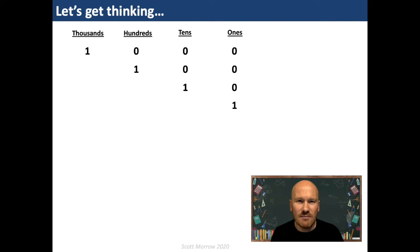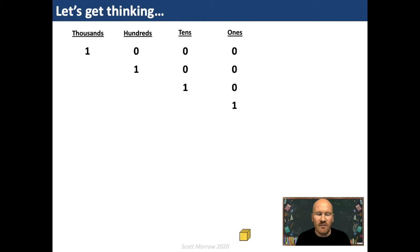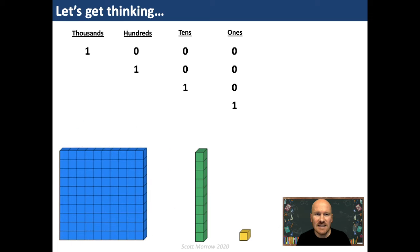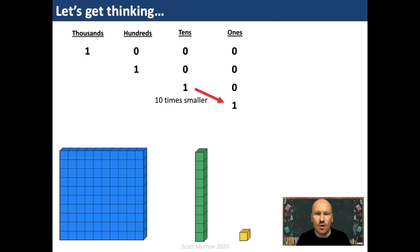However, our number system isn't so flexible. Let's go back to our base ten materials to consider why. Let's start with one. If we have ten ones, we have a ten. Ten of those tens and we have a hundred. Ten of those hundreds and we have a thousand. We're getting ten times bigger each time, continuing up to tens of thousands, hundreds of thousands, millions and so on. Our number system is called the decimal system because 'deca' or 'deci' means ten. Each digit is scaling up or down by ten depending on which way we're going.